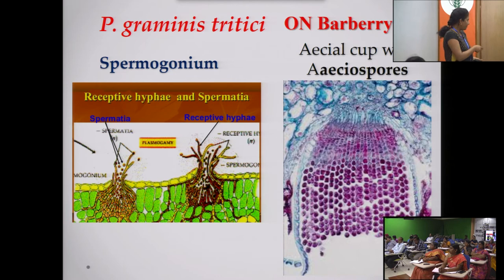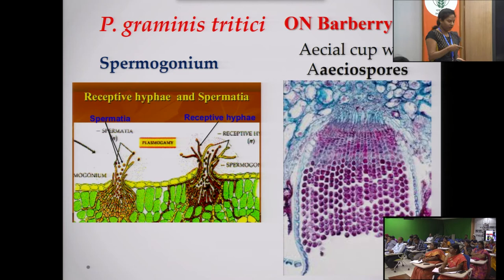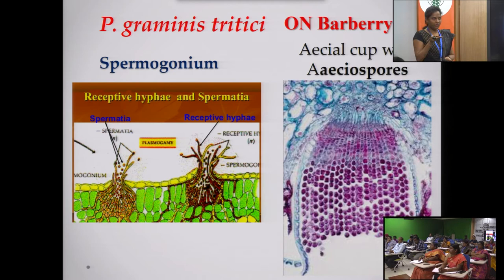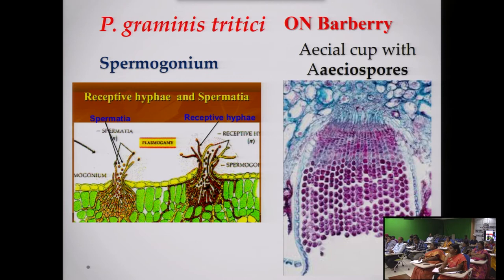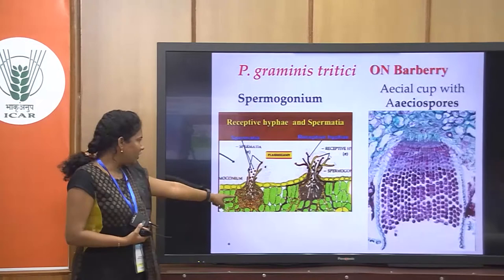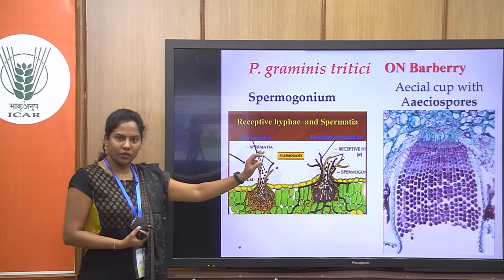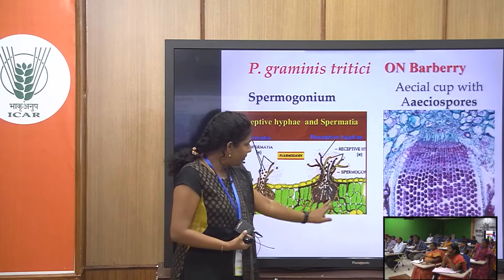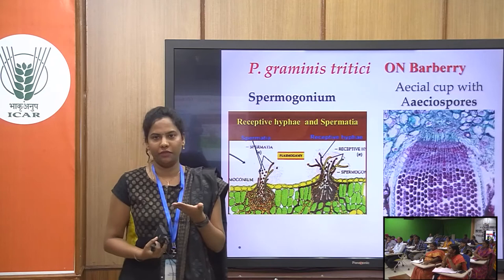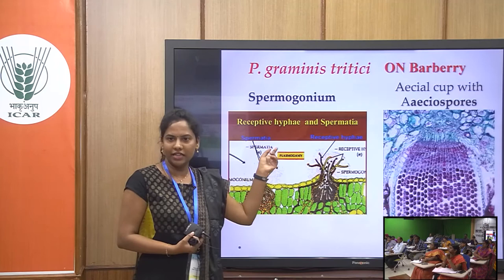When the basidiospore is released and lands on the upper leaf surface of the barberry plant, it produces a spermogonium. There will be two different strains — positive and negative strains. When the spermation of the positive strain comes in contact with the receptive hyphae of the negative strain, fertilization occurs. After fertilization, the spermogonium produces hyphae from its bottom, which reach the lower surface of the leaf.